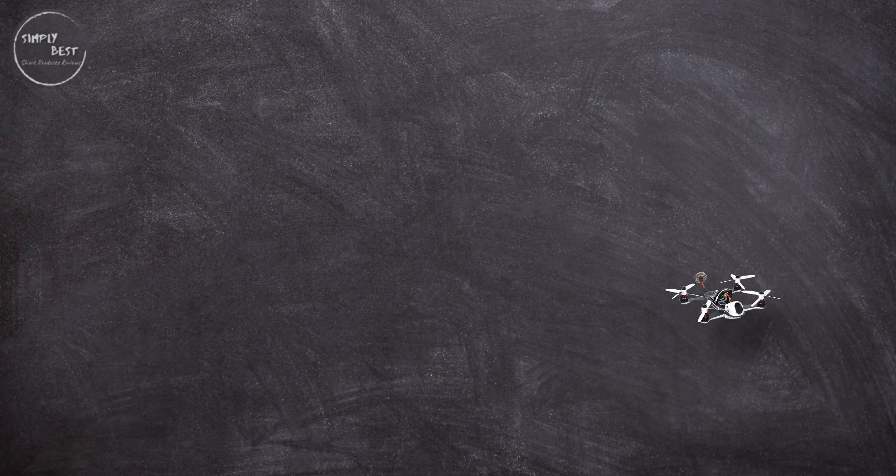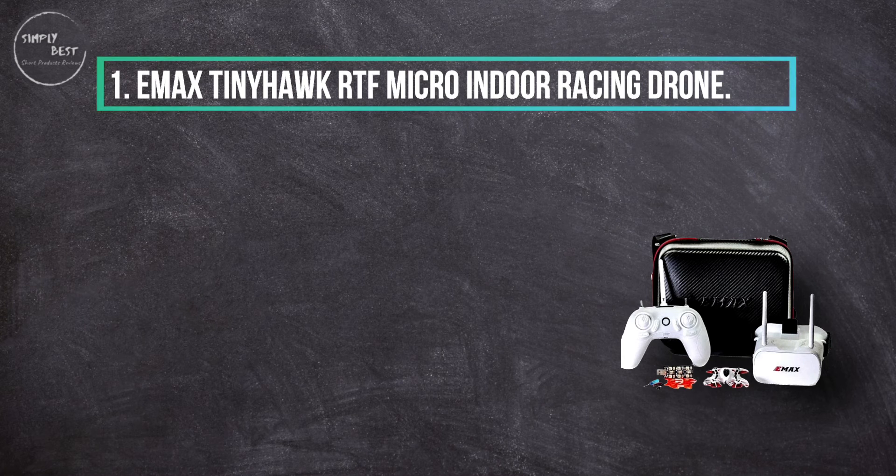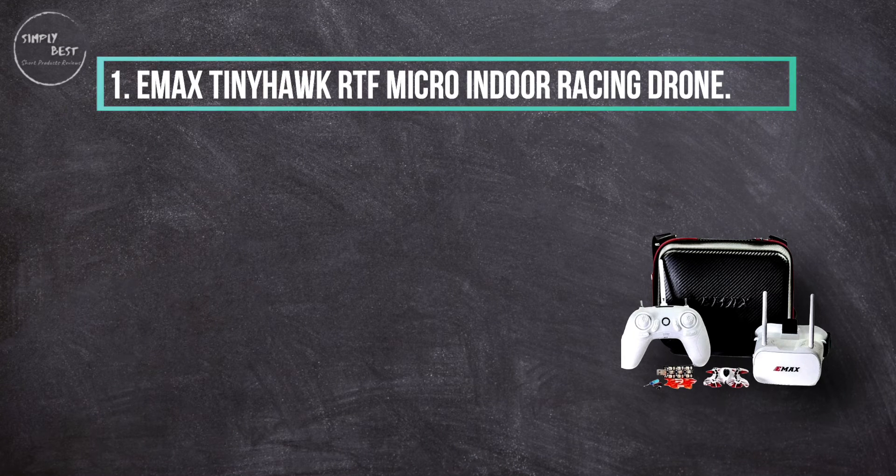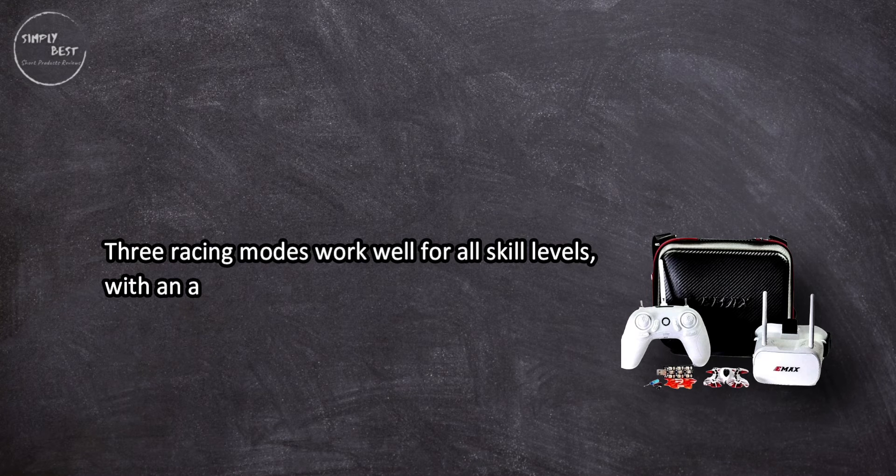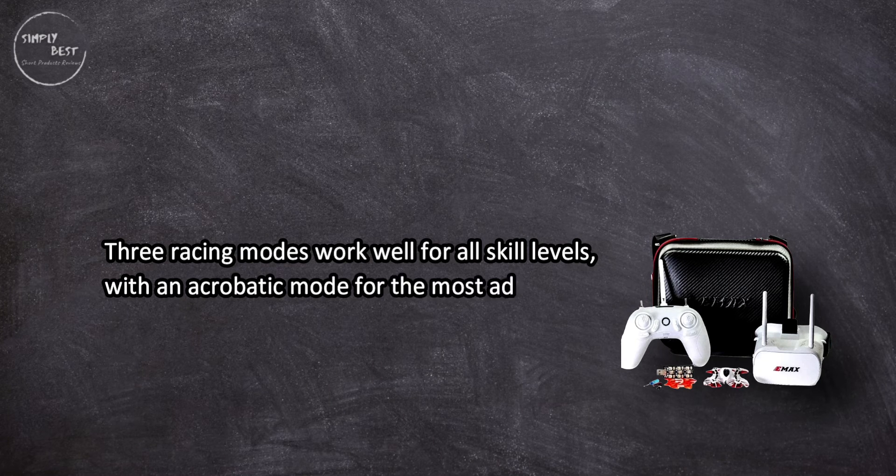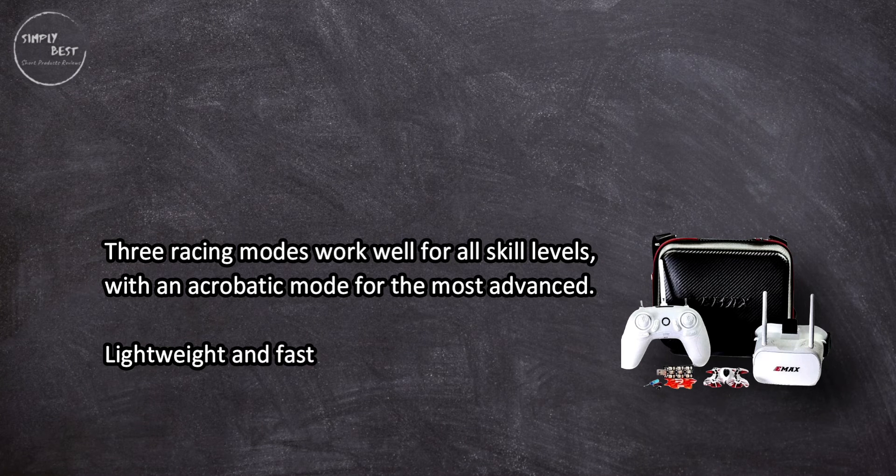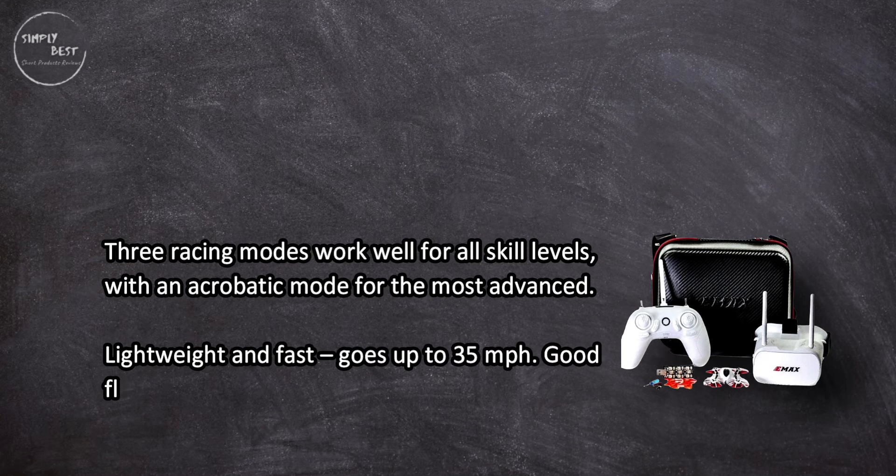At number one, Emax Tiny Hawk RTF micro indoor racing drone. Three racing modes work well for all skill levels with an acrobatic mode for the most advanced. Lightweight and fast, goes up to 35 miles per hour. Good flight range, easy to wear the included FPV goggles even with eyeglasses.